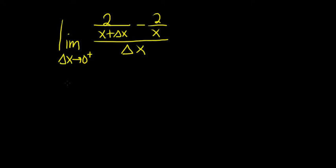In this problem, we have to find the limit of 2 over x plus delta x minus 2 over x all over delta x.